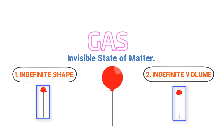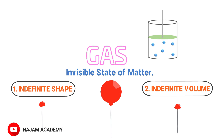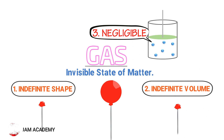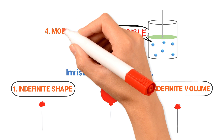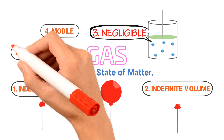Let me give you another example. Consider a closed cylinder with a movable piston. Let there be six molecules of gas in this closed cylinder — remember that gas molecules are free to move. Thirdly, the force of attraction between gas molecules is very weak, or you can say negligible. Fourthly, gases are mobile, meaning they are freely moving. Fifthly, they are compressible.